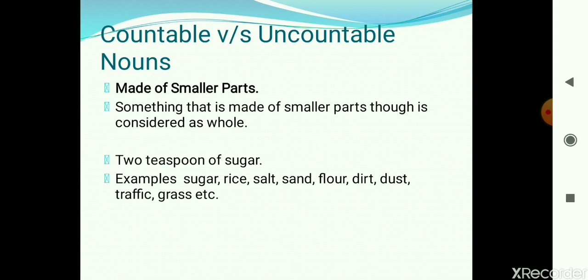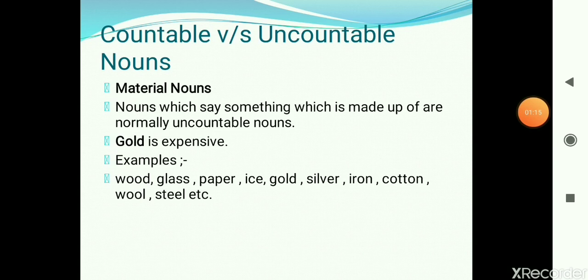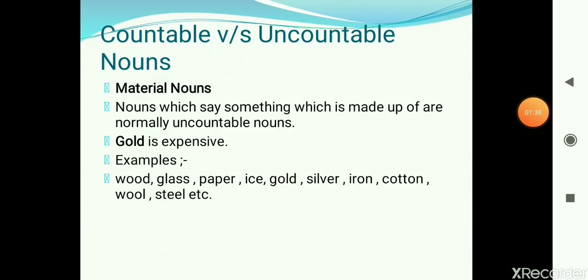Nouns that describe what something is made of are normally uncountable — these are generally called material nouns. Some examples are wood, glass, paper, ice, gold, silver, iron, cotton, wool, and steel. For example, you cannot count gold; you can count bars of gold, but you are counting the bars, not the gold itself. With gold we use a singular verb — 'Gold is expensive' — because gold is uncountable.